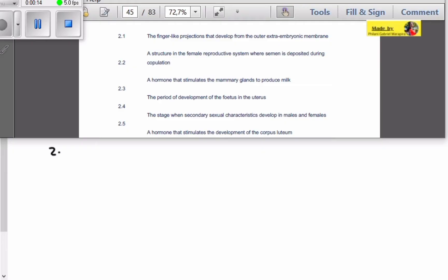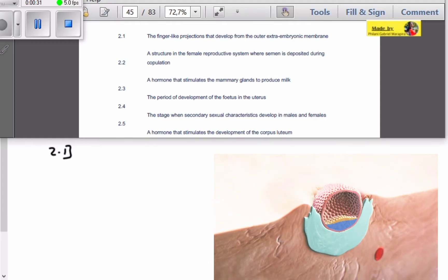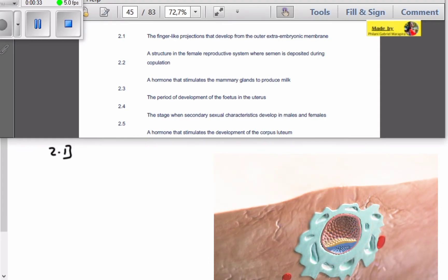So let's start here on 2.1. In 2.1 they say the finger-like projections that develop from the outer extra-embryonic membrane. Remember that when a blastocyst implants into the endometrium, it develops two outer membranes.